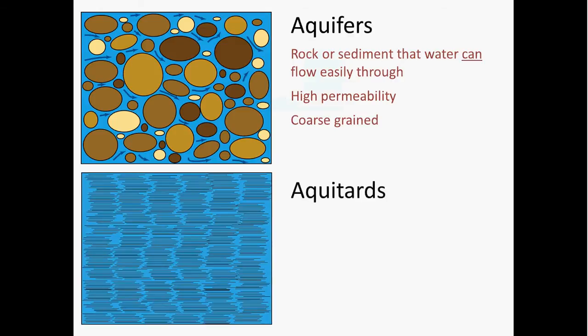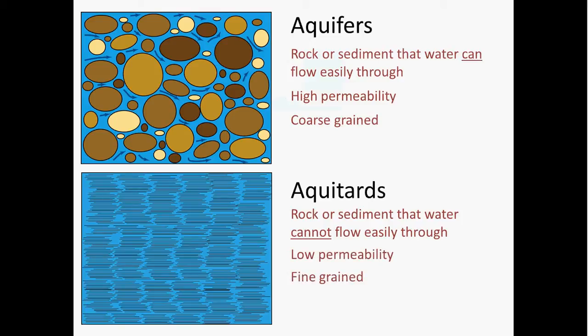In contrast to aquifers, aquitards are rock or sediment that water cannot easily flow through. Aquitards have a relatively low permeability and they tend to be fine-grained rocks like shale or siltstone. What I've attempted to illustrate here on the bottom left is a very highly magnified look at a shale. Shale is composed largely of clay minerals.